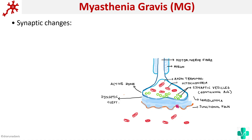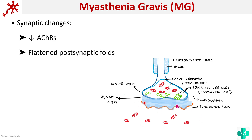What are these synaptic changes? The most important change is that there are decreased acetylcholine receptors, as you can see in this image. Second, the post-synaptic folds are more flattened — in the previous image we used to see a lot of folds, but here the post-synaptic folds are flattened. The synaptic cleft has also widened. These are the synaptic changes that occur because of antibody-mediated damage.